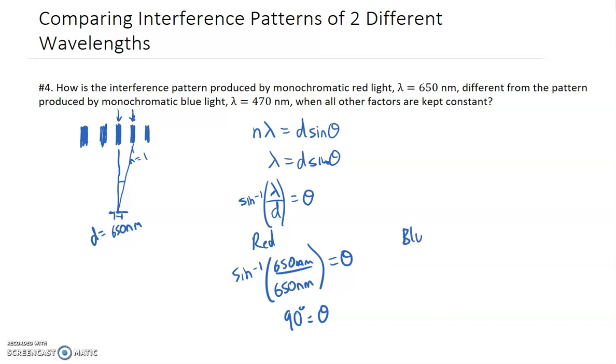In the case of the blue, we would get sine inverse. The wavelength would be 470 nanometers. And if you divide that by 650 nanometers, you get an angle of 46 degrees.